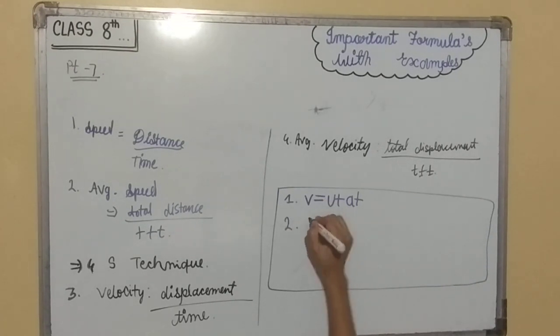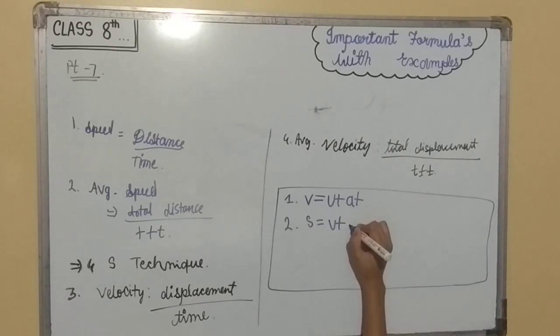Second is S is equal to Ut plus half at square. Displacement-time relation.